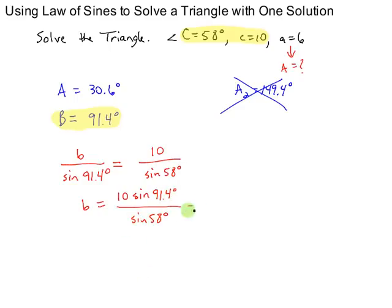And when I put this into my calculator, I get approximately 11.8. So now I know all six parts of the triangle. The three given parts and the three parts that we had to find.